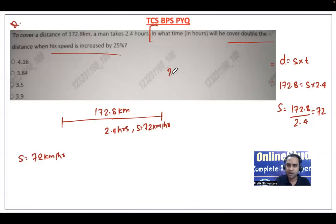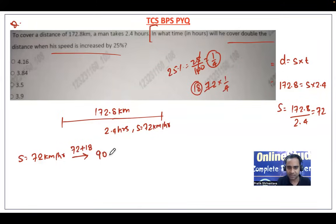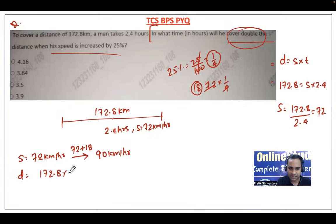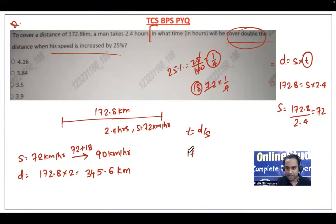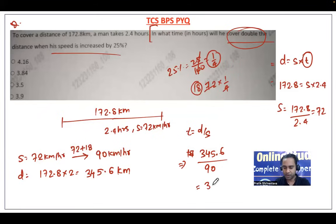A 25% increase means multiplying by 1 and 1/4. So the new speed is 72 plus one-fourth of 72, which is 72 plus 18, equaling 90 kilometers per hour. Double the distance is 172.8 into 2, which is 345.6 kilometers. Time equals distance by speed: 345.6 divided by 90 equals 3.84 hours. Option B, 3.84 hours, is the correct answer.